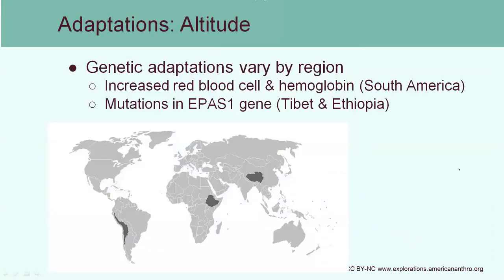There are also genetic adaptations in indigenous populations, including genes that code for more red blood cells and higher levels of hemoglobin. A couple of populations that show this are from the Andes mountains in South America, where people have lived in these very high mountains for many generations, as well as in Eastern Africa and the Himalayan mountains.